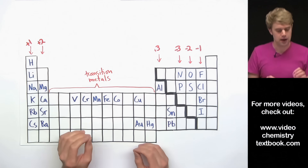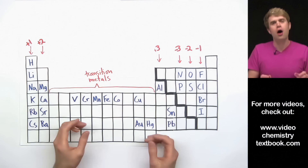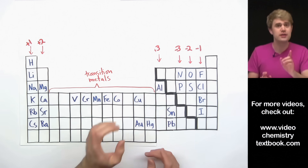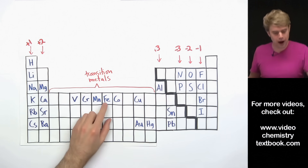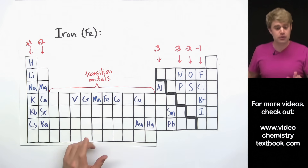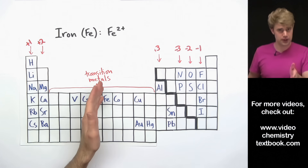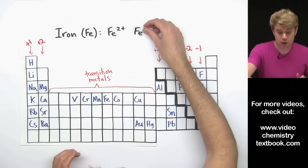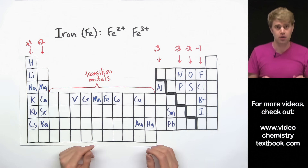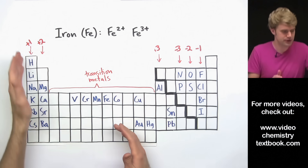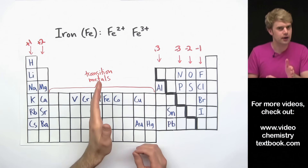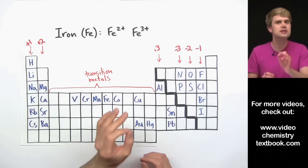These metals are unique because many of them are able to make multiple ions with different charges. Iron, Fe, for example, is able to make an Fe2+ ion, but it's also able to make an Fe3+ ion. This is different from the metals over here — they tend to always make ions with the same charge.